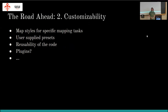Customizability has been on the iD roadmap since very early on but can still be improved. For example, having specific map styles for specific mapping tasks could be very useful — if you're interested in mapping road surfaces, a map style that highlights where that data is missing would be beneficial. User-defined presets or some kind of plugin system might also be something to explore in the future.